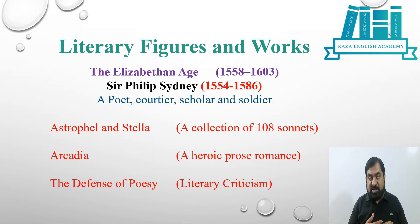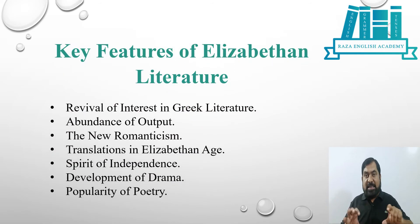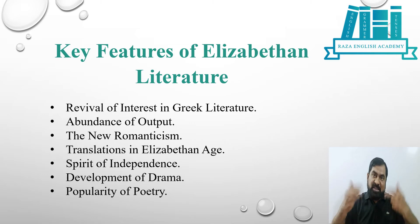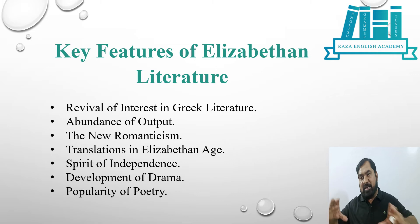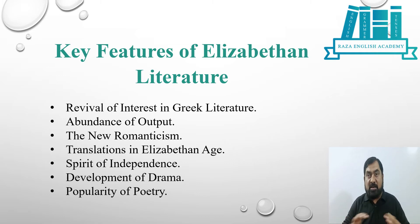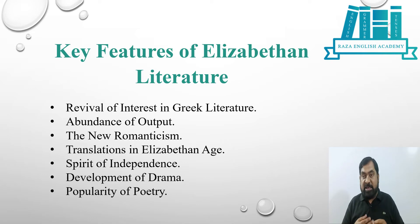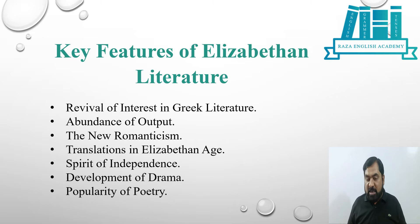The key features of Elizabethan literature include: revival of interest in Greek literature, abundance of output, Neo-Romanticism, prolific translations, spirit of independence, development of drama, and popularity of poetry. These are the people who are copied, imitated, and even idolized to date — making the Elizabethan Age a very distinct period even within the Renaissance.